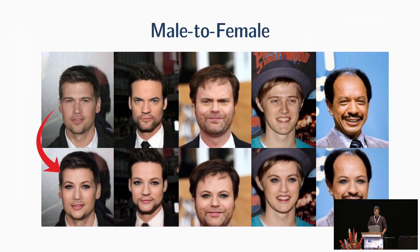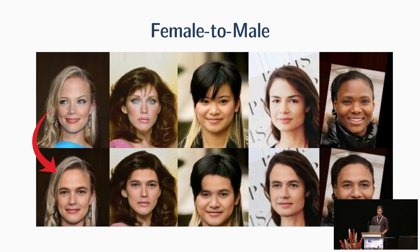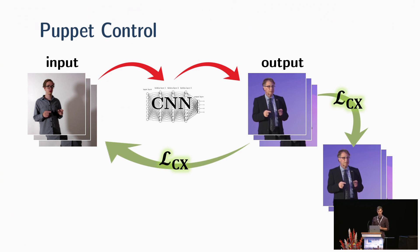And here are some results of male to female and on the opposite direction. Our last application is person-to-person transformation. We call this puppet control since after training, we can change the pose of person A in the input and generate image of person B in the output in the same pose.